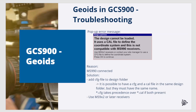Another coordinate system related error message you might see is: the design file cannot be loaded — it uses a cal file to define the coordinate system and this is not compatible with MS 990 receivers. The reason for this message is actually given in the message itself: MS 990 receivers are being used but they do not support cal files. A solution would be to add CFG files to the design folder, since this is supported by MS 990's file type. Be aware that this will limit the GeoEat support options.